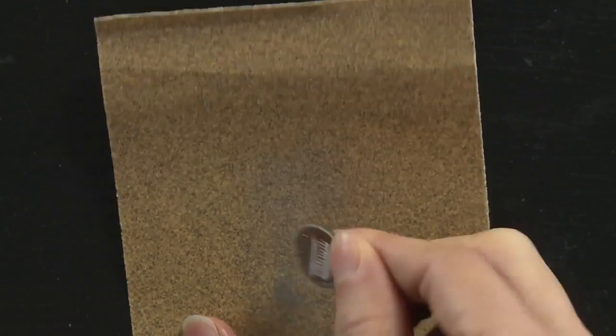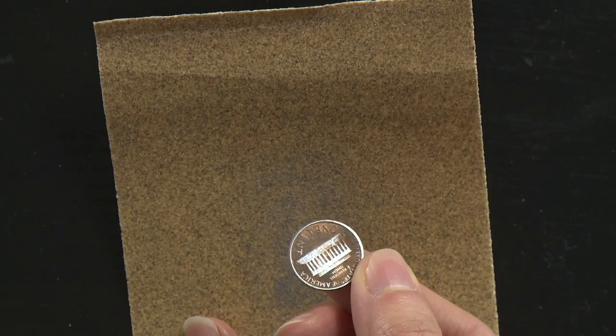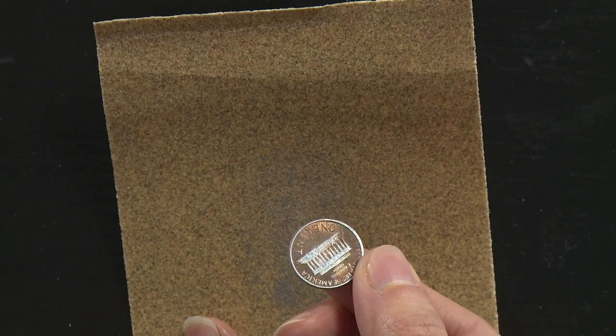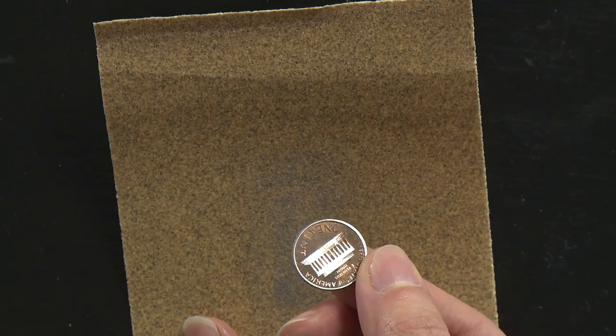After a little bit of sanding you'll see that the zinc side of the penny is starting to show through. But there's still quite a bit of copper so we need to keep sanding until the entire face of the penny is zinc.